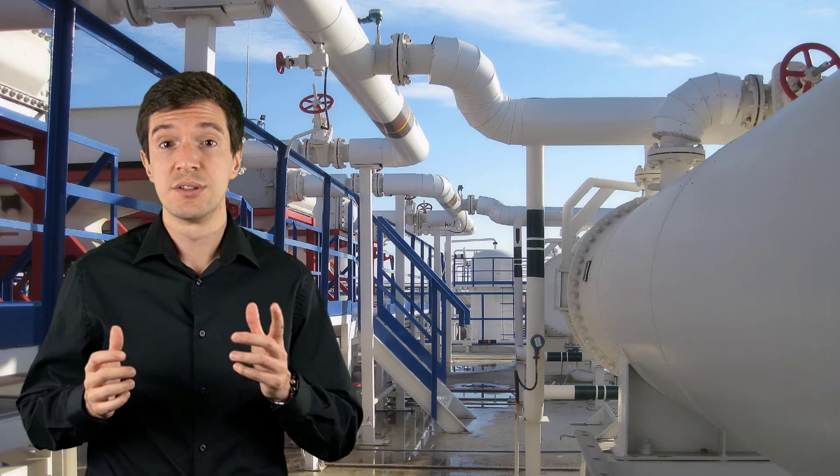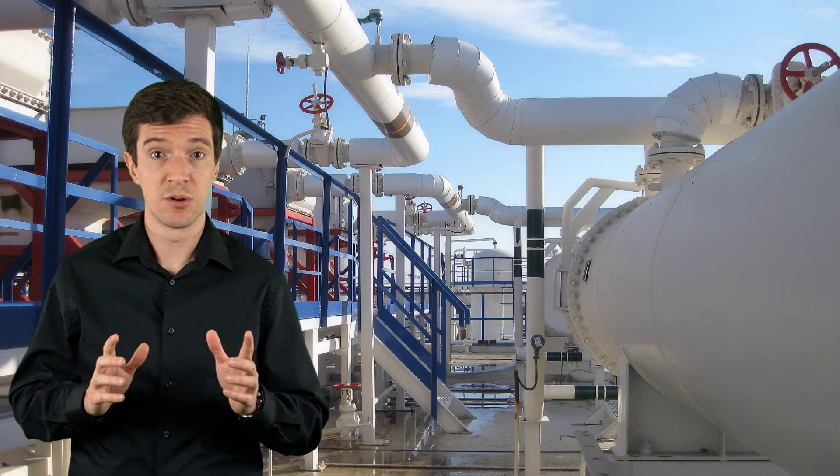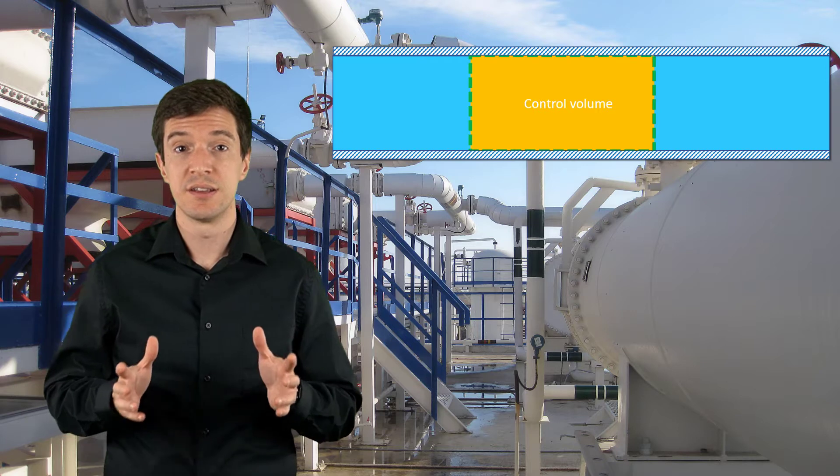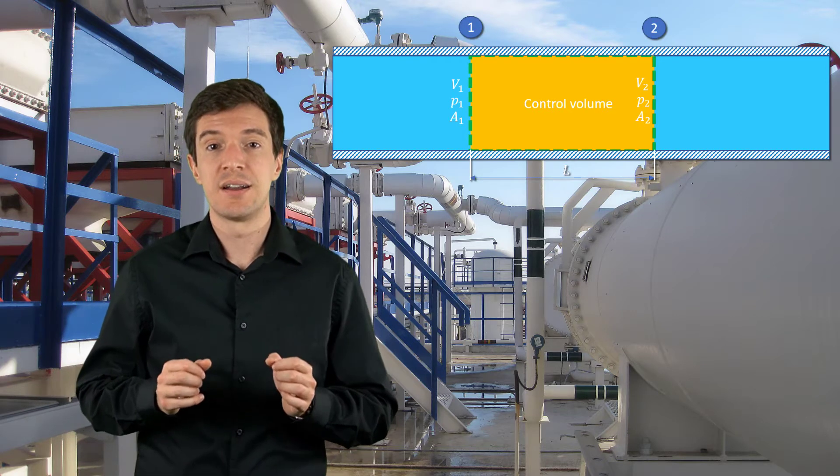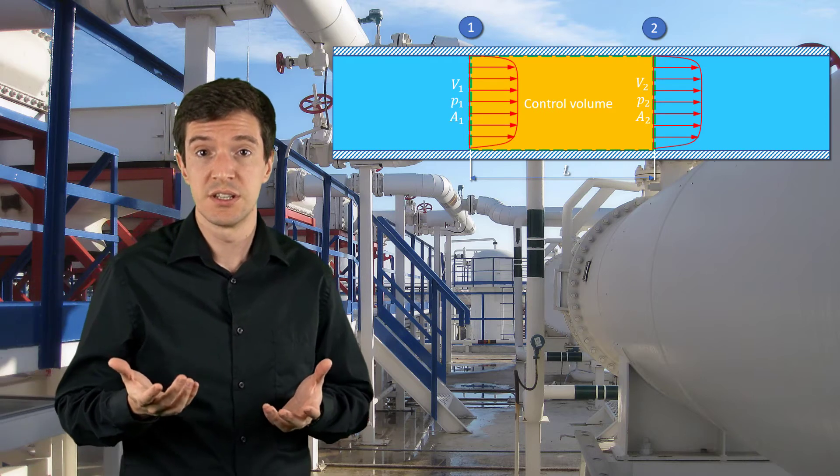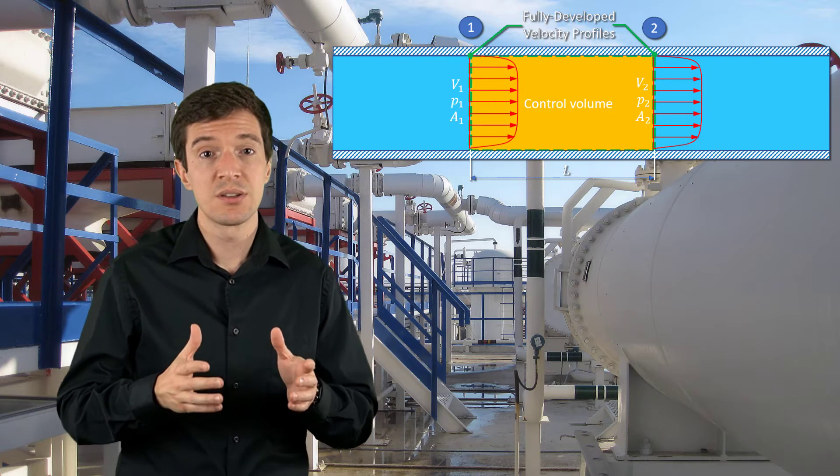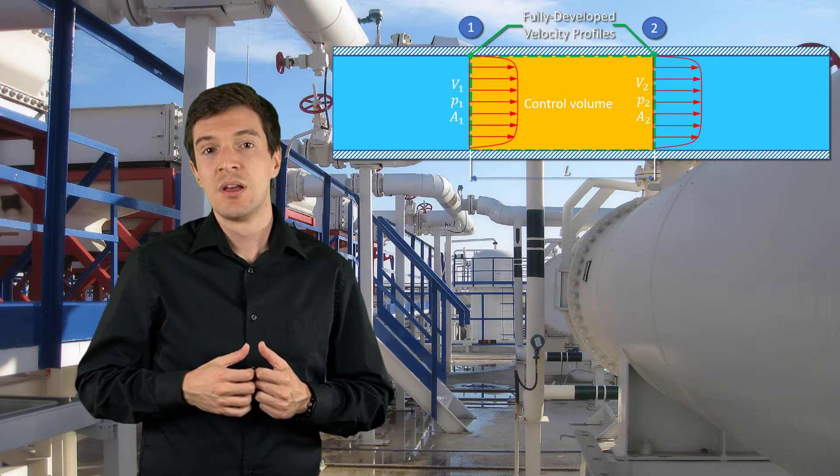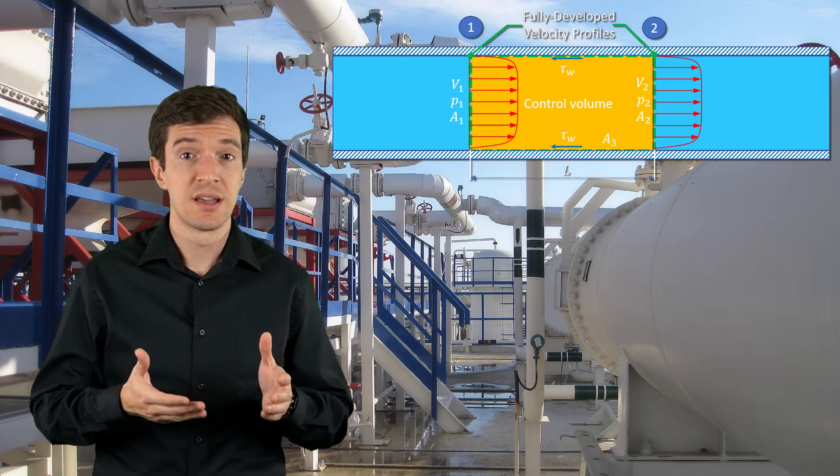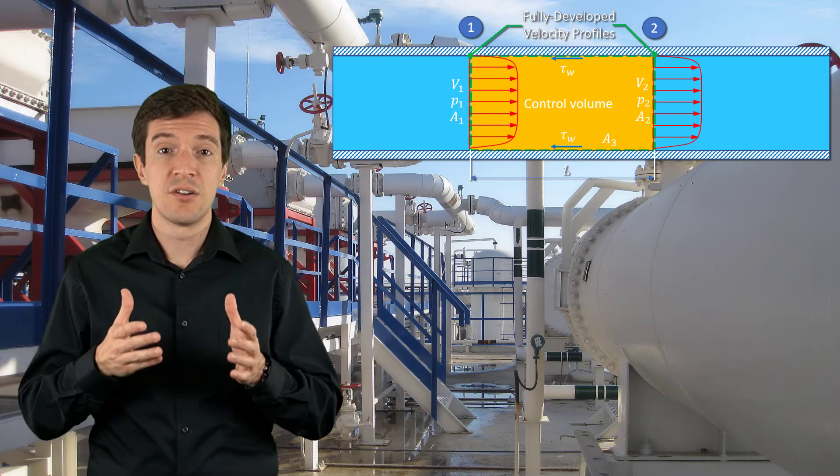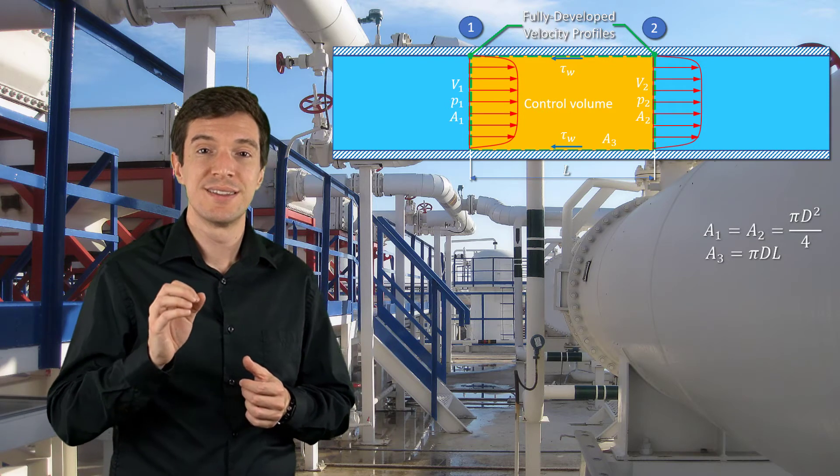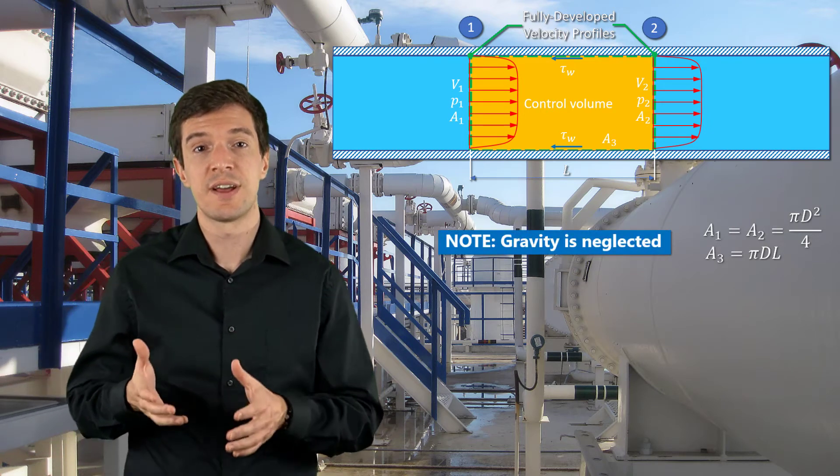Let's start our analysis considering a fully developed incompressible turbulent flow in a circular pipe. If we analyze the cross section of the pipe, we can define the control volume between locations 1 and 2, that are at a distance L from each other. The flow at the two locations presents a fully developed velocity profile, and its characteristic velocity and pressure. On the side of the control volume defined by the pipe wall, we have friction and the wall shear stress acts on the fluid. Note that here the pipe is horizontal, and so the gravity effects can be neglected.